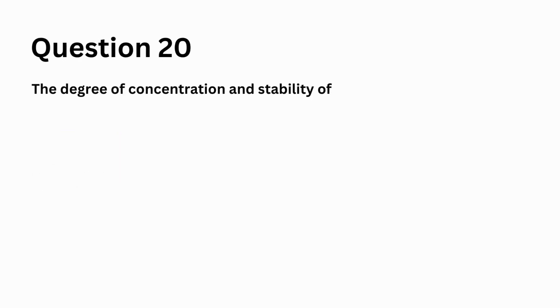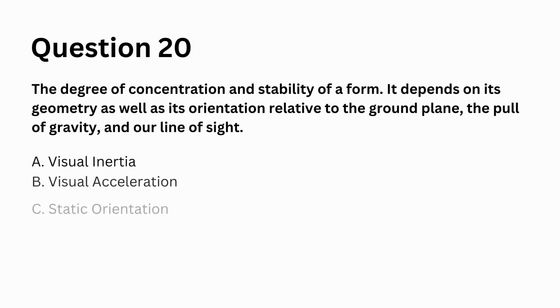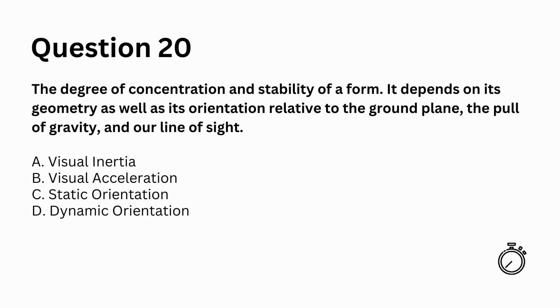The degree of concentration and stability of a form. It depends on its geometry as well as its orientation relative to the ground plane, the pull of gravity, and our line of sight. A. Visual Inertia, B. Visual Acceleration, C. Static Orientation, D. Dynamic Orientation. Answer: A. Visual Inertia.